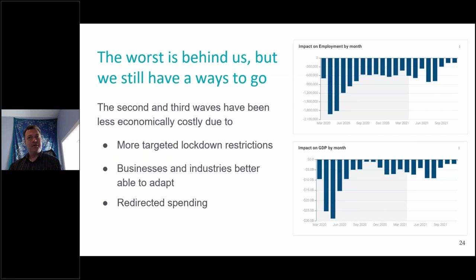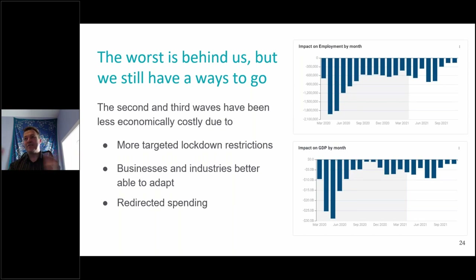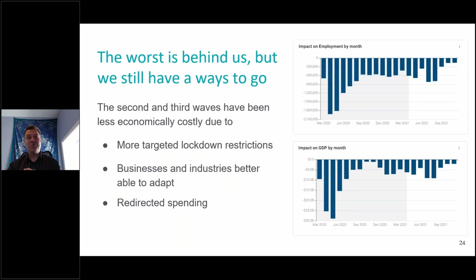The second and third waves have been less economically costly than the first. We can gauge how much the difference is based on these different estimates. These graphs show employment by month for Canada and GDP by month for Canada — the impact relative to what was anticipated. Some of the gray area is the past impact, and beyond that is our forecast based on a particular scenario. One could attribute the lower cost of later waves to various things, though these are just the economic costs — on the health side, the second wave was obviously a lot worse in many respects.